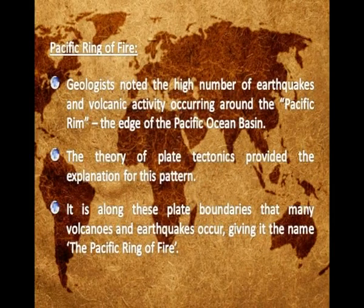Geologists noted the high number of earthquakes and volcanic activity occurring around the Pacific Rim, the edge of the Pacific Ocean Basin. The theory of plate tectonics provided the explanation for this pattern. It is along these plate boundaries that many volcanoes and earthquakes occur, giving it the name the Pacific Ring of Fire.